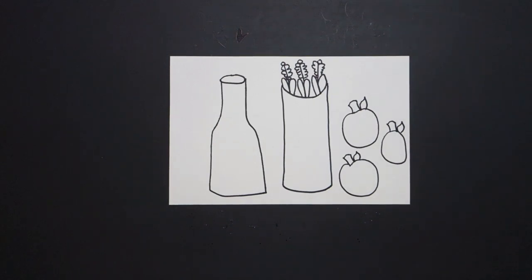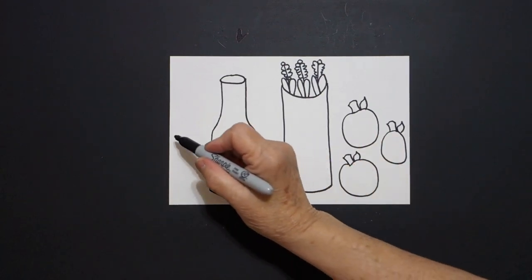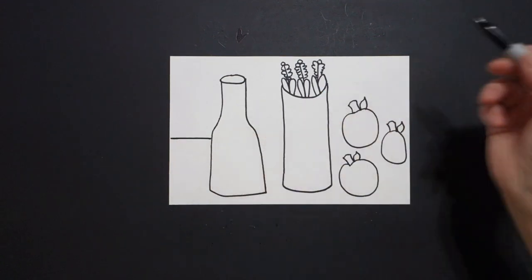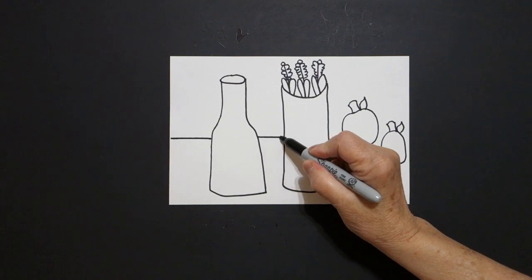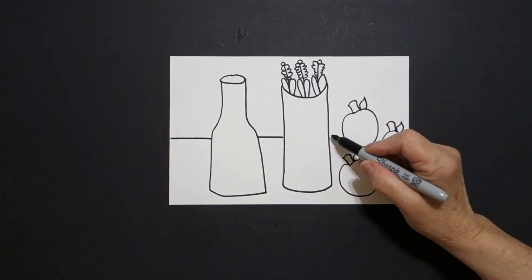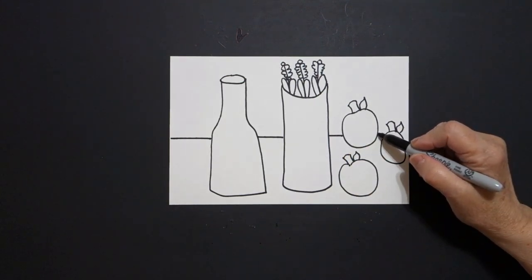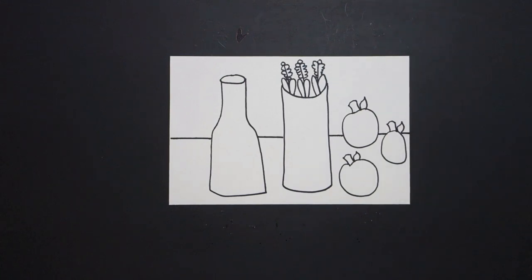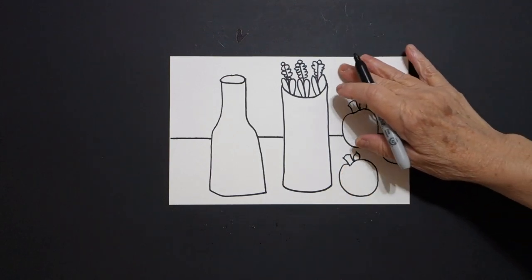Now I'm going to draw a horizon line. This is very important because now all of these inanimate objects that are not alive are going to be sitting on a tabletop with a back behind it. So I draw a straight line — it crashes into that, jump over, continue it. Straight line, jump over, continue it — all the way to the edge of your paper. Now we have things sitting on the bottom up against the top.